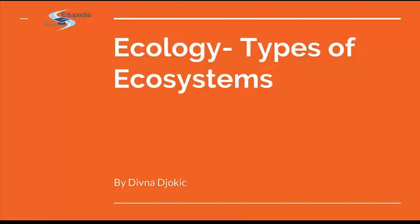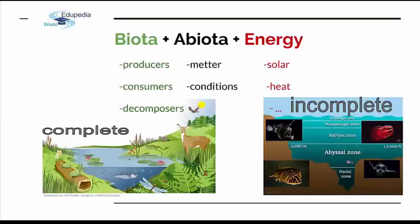This is more in general. So for the beginning we're going to recap everything we talked about in the previous presentation. As you remember, every ecosystem on this planet has three main components: there are biota, abiota, and energy. There are some sub-components included under these three names, and if you have all three, the ecosystem will be called complete. But if it's missing one of these three main components, it will be called an incomplete ecosystem. We talked about this in the previous presentation — this is just a reminder.